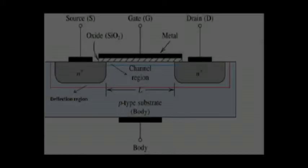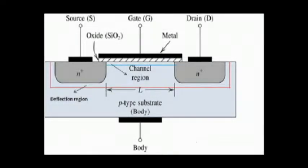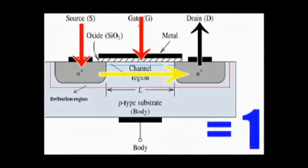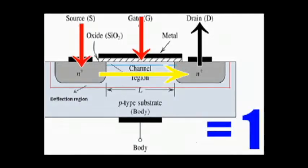What enables them to reach such tremendously small sizes is the fact that they are relatively simple single-function devices. In essence, a transistor works much like this. There is power applied to the source and drain, but there is no current flow, generating logic zero. When you apply voltage to the gate, current flow is enabled and it generates a logic one.